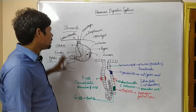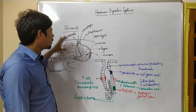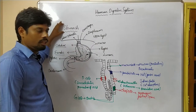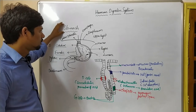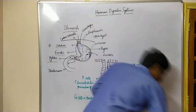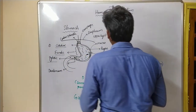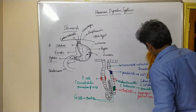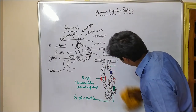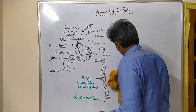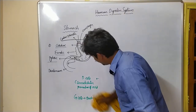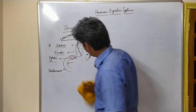So in this way, the arrangement and architecture of the stomach is present. Now let us start looking at another important internal structure: the small intestine.